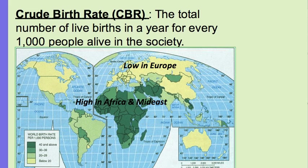The crude birth rate is the total number of live births in a year for every 1,000 people alive in the society. Typically it's very high in places like Africa and the Middle East, moderate in Latin America, and low in Europe and North America.